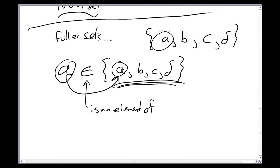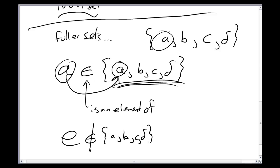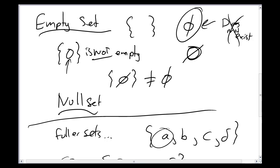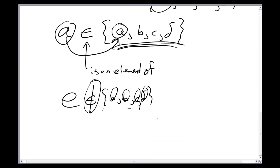This symbol means 'is an element of.' Now the letter E is not an element of the set {A, B, C, D} — E is not one of the four things inside that set, so I say it's not an element. Just like I use a slash to say a set has nothing in it — an empty set — a slash through something in math means 'not.' So we have the idea that things are elements and are not elements of a set.